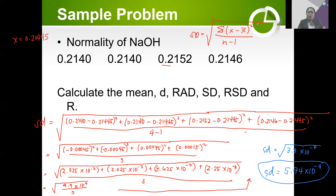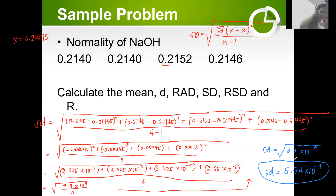Do not forget that we have a square for each difference. Each of those will be squared before adding everything and then dividing by n minus 1. And before you get the final answer, you have to get the square root first of everything — that's when we get 5.74 × 10⁻⁴.